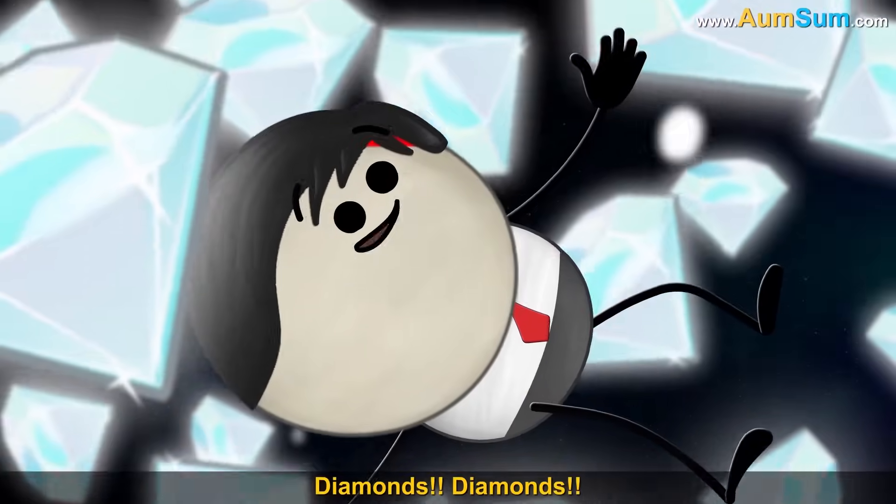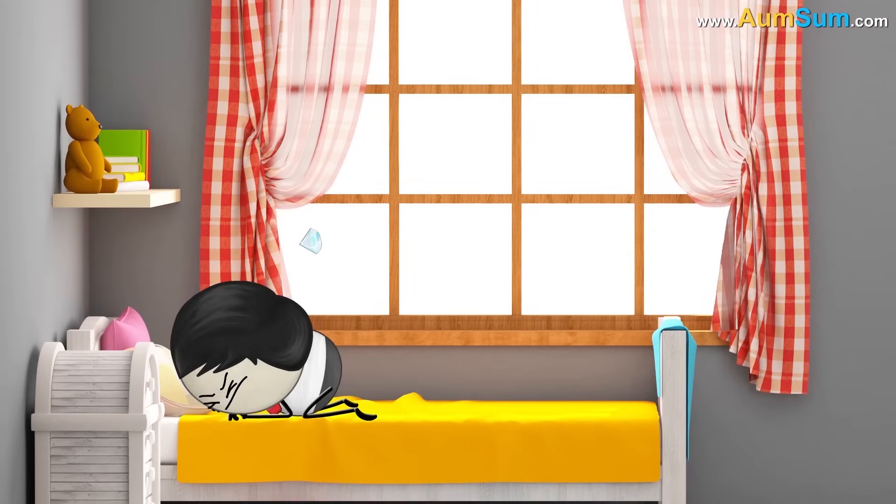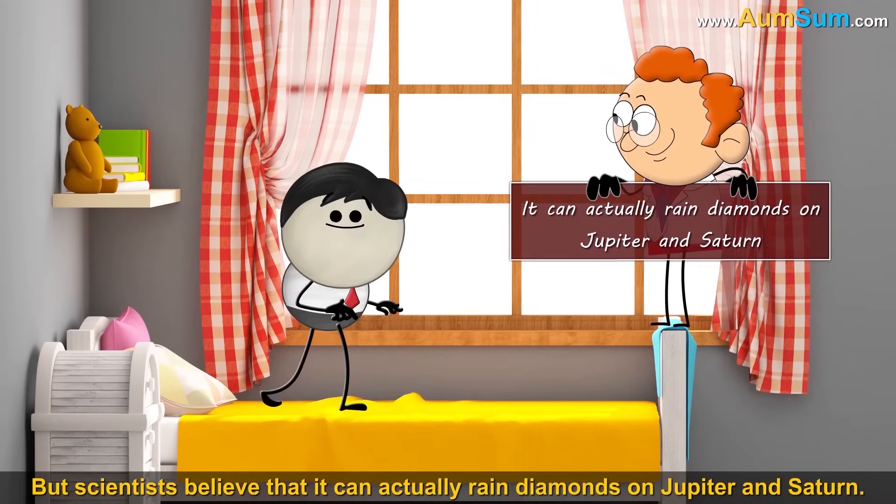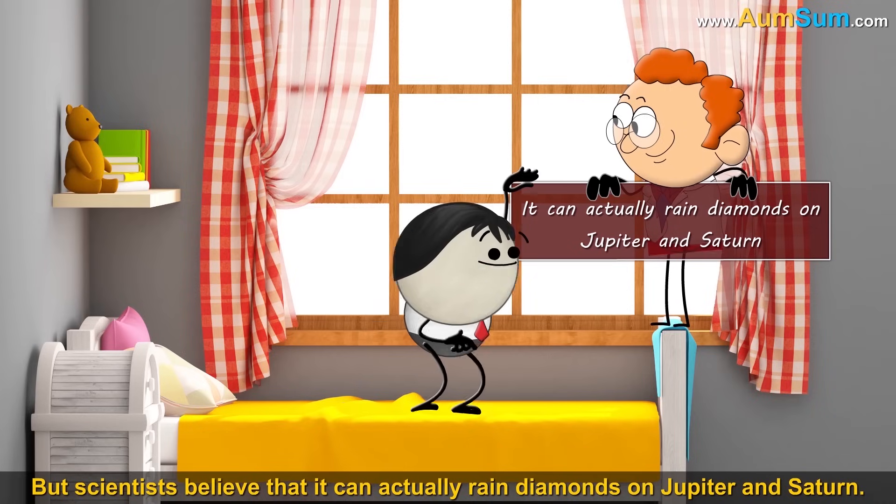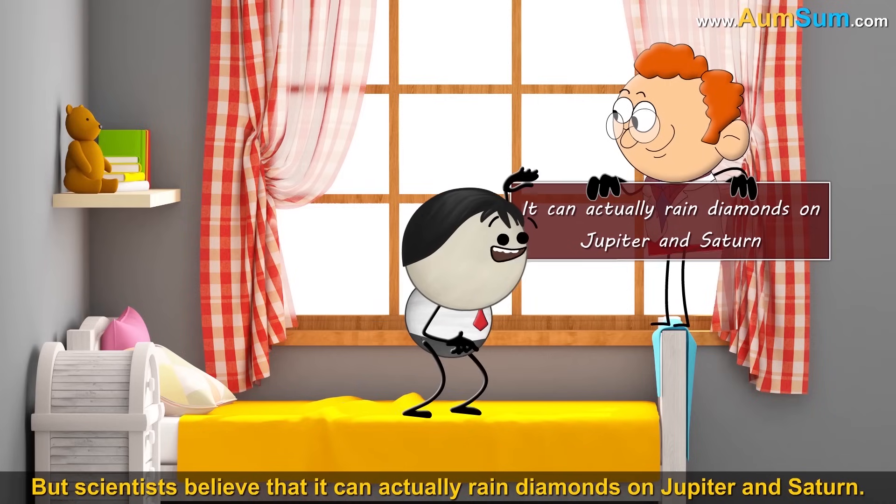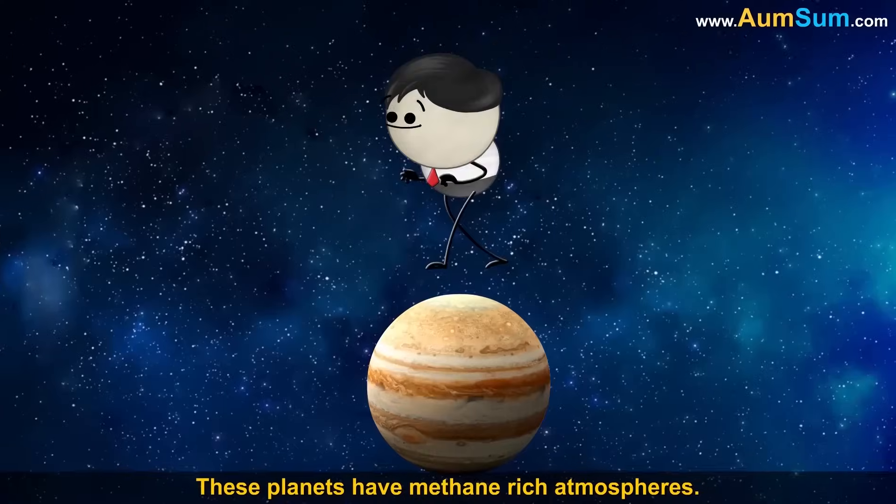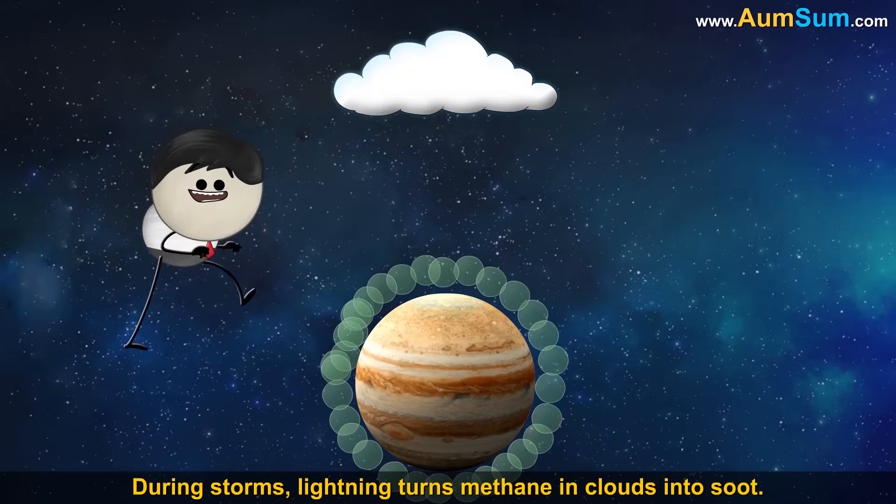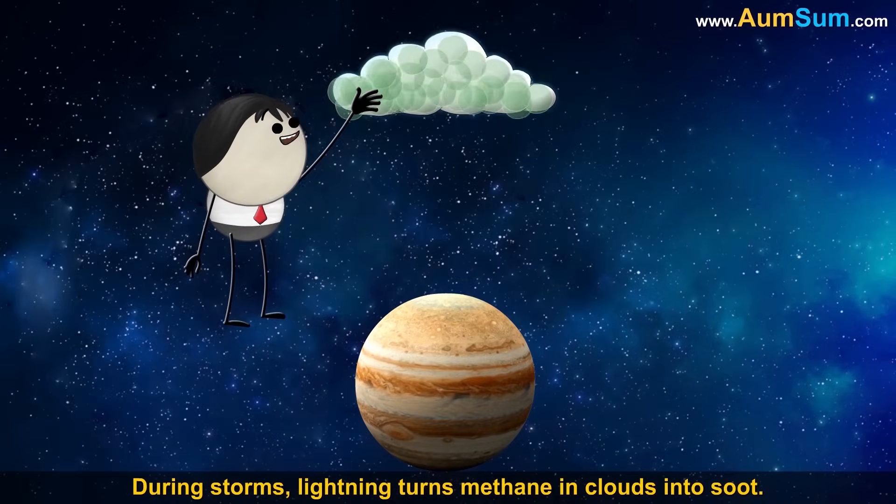Diamonds. Diamonds. Oh. Where did they go? But scientists believe that it can actually rain diamonds on Jupiter and Saturn. These planets have methane-rich atmospheres. During storms, lightning turns methane in clouds into soot.